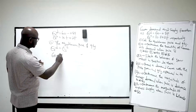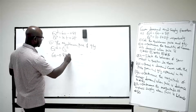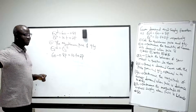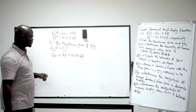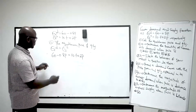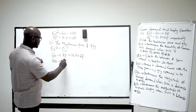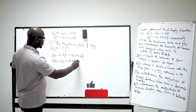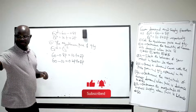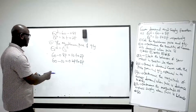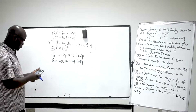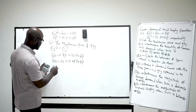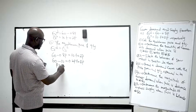Collecting like terms: 60 − 10 = P + 0.8P, which gives 50 = 1P. So 0.2P + 0.8P = 1P, and 60 − 10 = 50. Therefore P equals 50. The equilibrium price is equal to 50.